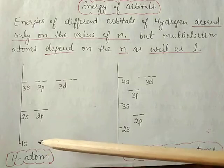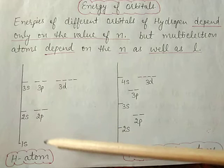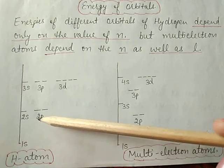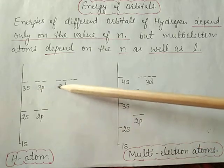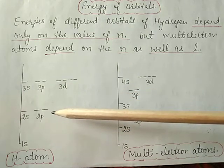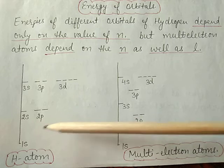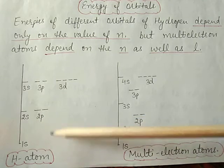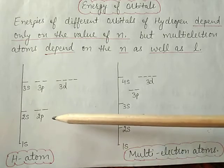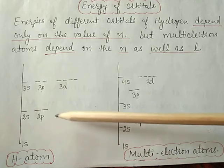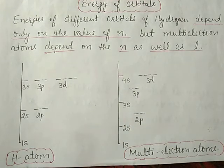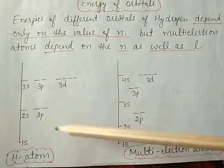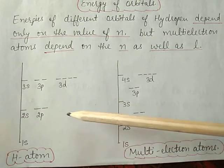In case of the hydrogen atom, the energy order of different orbitals is: 1s < 2s = 2p < 3s = 3p = 3d. These orbitals have the same energy, meaning the 2s and 2p orbitals differ in shape but the electrons present in these orbitals have the same energy. Orbitals of the same subshell having the same energy are called degenerate orbitals.